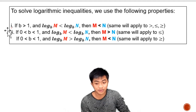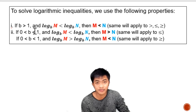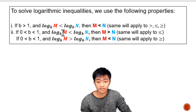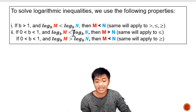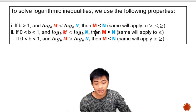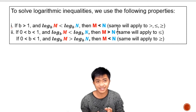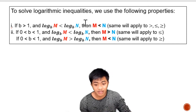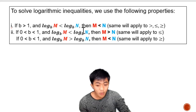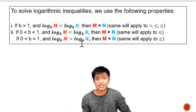Property 2: if the base is greater than 0 but less than 1 — that is, the base is in between 0 and 1 — and the logarithm of m to the base b is less than the logarithm of n to the base b, then m is greater than n. So we copy the arguments but reverse the direction of the inequality symbol.